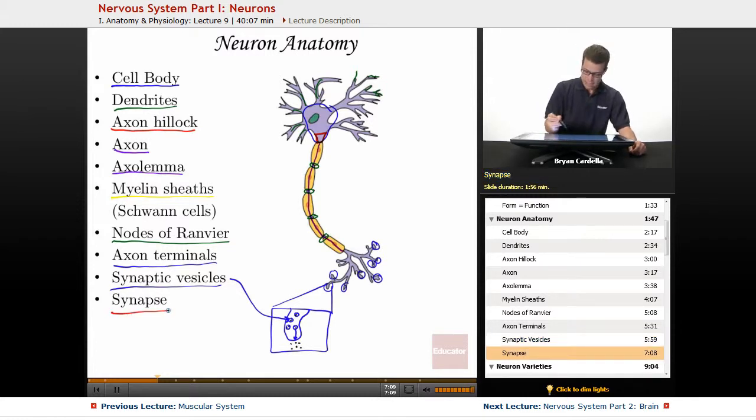The synapse is the space. So right where I drew those little black dots, that's the synapse. And the synapse, there's two main varieties.